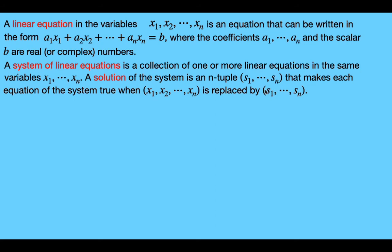So this means we have some n-tuple of real numbers. If we were to have a linear equation and replace x sub 1 with s sub 1, x sub 2 with s sub 2, and x sub n with s sub n — and do that for each linear equation in the system — then each linear equation would be true, so it would equal b.